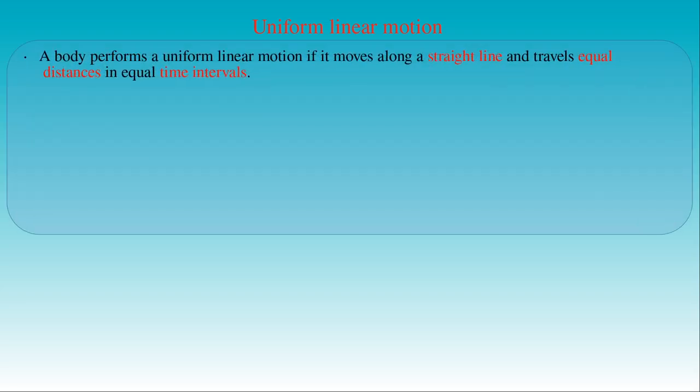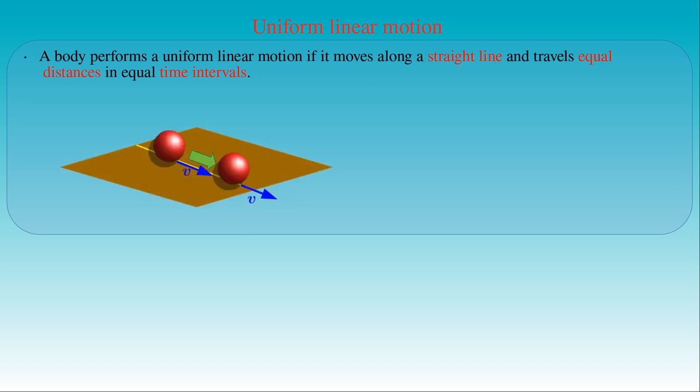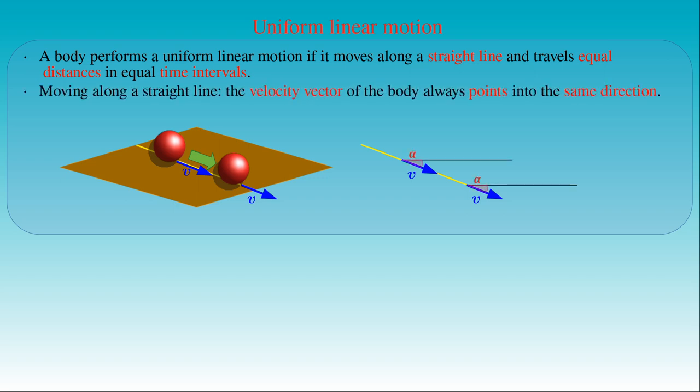The simplest form of motion is the uniform linear motion. By definition, a body performs a uniform linear motion if it moves along a straight line and travels equal distances in equal time intervals. In the left-hand side we can see a ball moving with a constant speed along a straight line over a surface. In the right-hand side, the path of the ball is shown with the velocity vectors at two different points along the path. If a body is moving along a straight line, its velocity vector always points in the same direction — that is, in the direction of the motion.